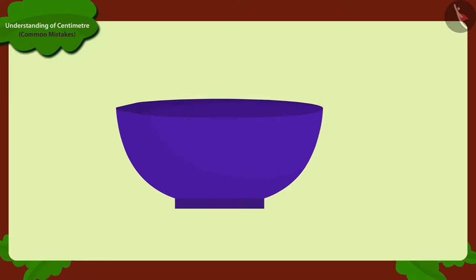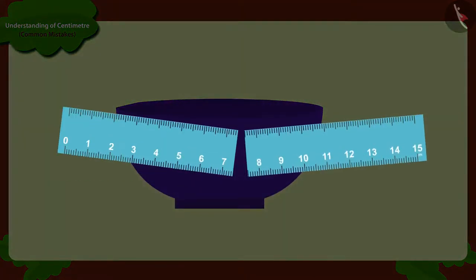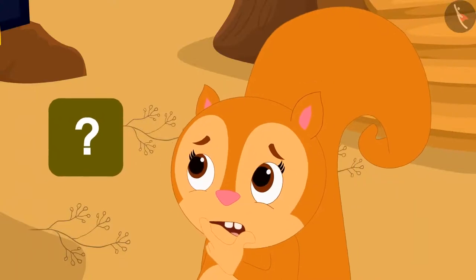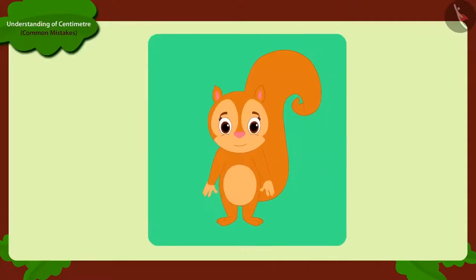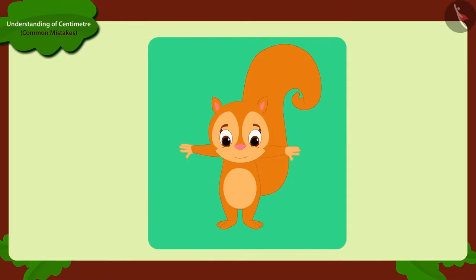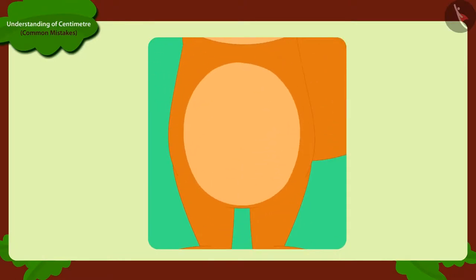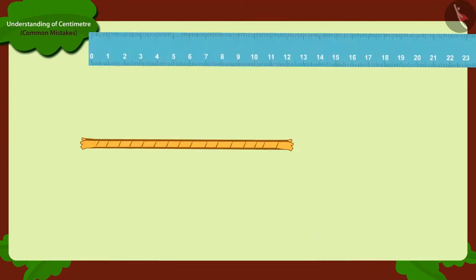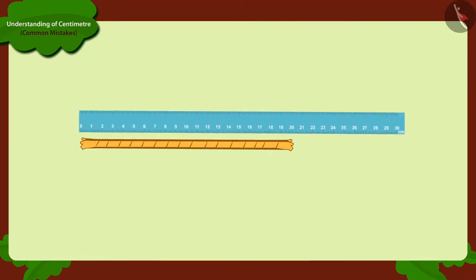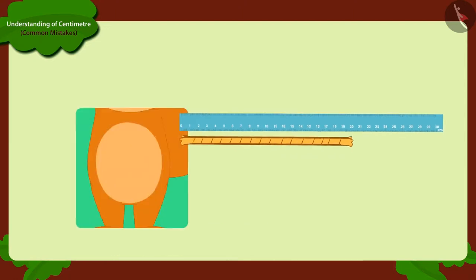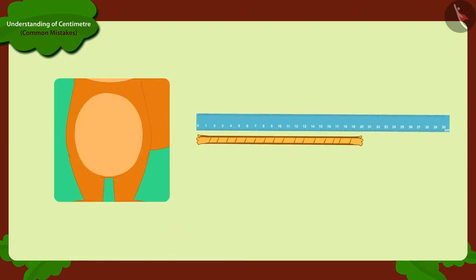Then, how do we do this? Suppose we have to measure the waist of Chanda. So, we will first measure her waist with a rope. Then, we will put that rope next to the ruler. What is the measurement of this rope? It is the right size of the waist of Chanda.